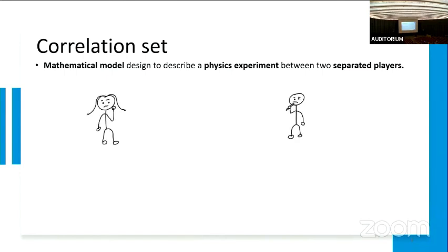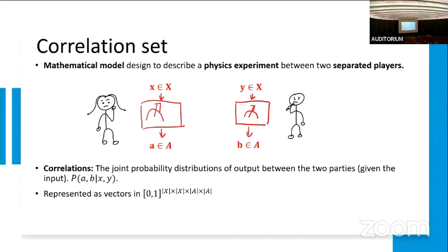Imagine you have two separate players, Alice and Bob. They are both given the input X and Y from some predetermined input set. When they do some local operations, they will get some answer set A and B. A correlation is just a joint probability distribution of output between the two parties given the input, usually described as P(a,b|x,y), denoting the probability of outputting A and B given input X and Y. This is usually represented as a real vector in the interval zero to one.